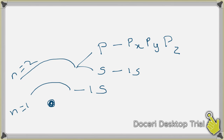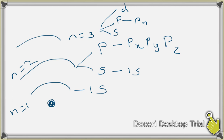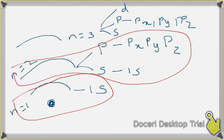For n equals 3, you have S, P, and D. So one S, Px, Py, Pz, and D — like that, you have different arrangements. So n equals 1 has only one S; n equals 2 has S and three P orientations; n equals 3 has three subshells.